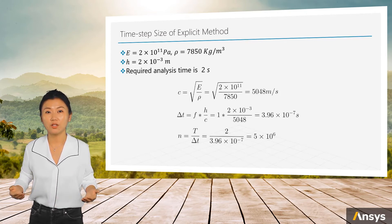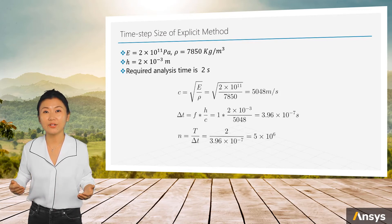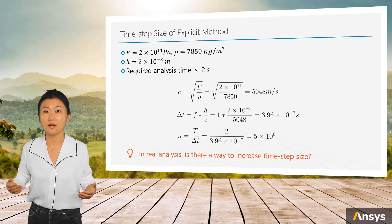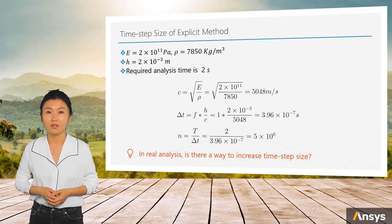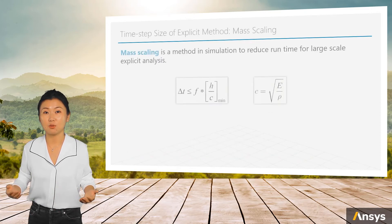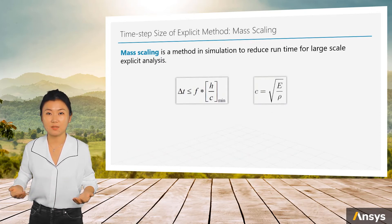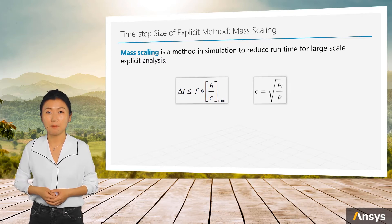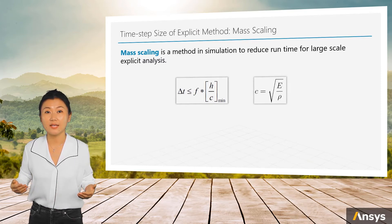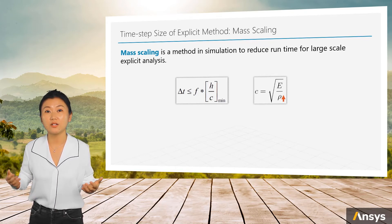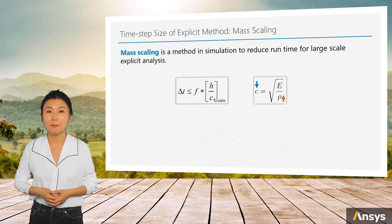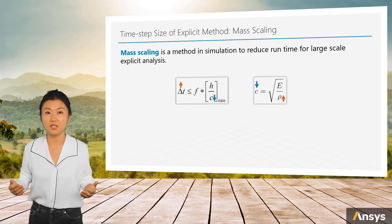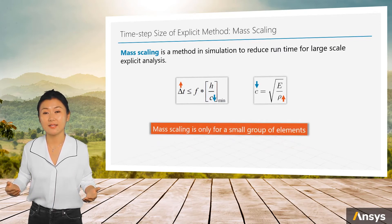So people start to wonder: in real analysis, is there a way to numerically increase time step size so as to expedite the analysis? The way to do this is called mass scaling. Mass scaling is a method in simulation to reduce runtime for large-scale explicit analysis. Based on the formulation for material wave velocity and time step size, the larger the material's mass, the larger the required time step can be. By mass scaling, the mass of the smallest elements of a model are scaled to be larger, so that the time step size used for the analysis can be increased.